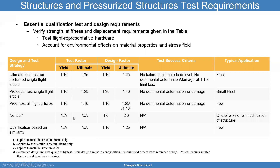There's also the option of not testing at all, which is usually reserved for secondary structures that aren't carrying the primary load. For a no-test approach, you want to use a yield factor of 1.6 and an ultimate factor of 2.0. This is usually done for secondary structures only.